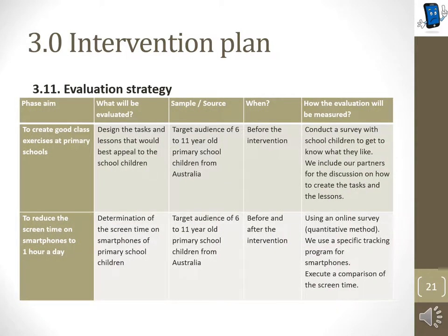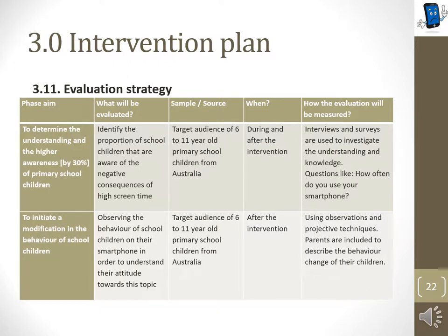The objectives are evaluated qualitatively and quantitatively, with the target audience evaluated throughout. The first step is to determine a good layout for the new subject before starting the intervention, using surveys with children and discussions with partners so that all views can be taken into account. Secondly, the objective of reducing screen time to one hour is determined by online surveys comparing screen time before and after the subject, measured using a tracking program on smartphones. Thirdly, during and after the intervention, we measure the understanding of school children and check if awareness of the social cause increased by 30%, using surveys and interviews.